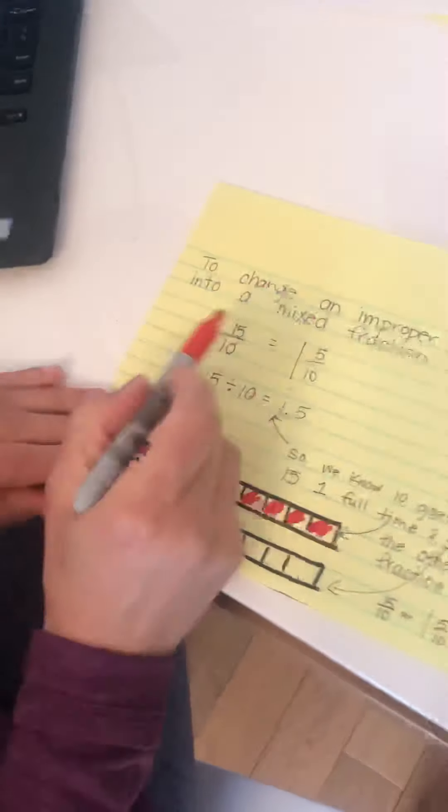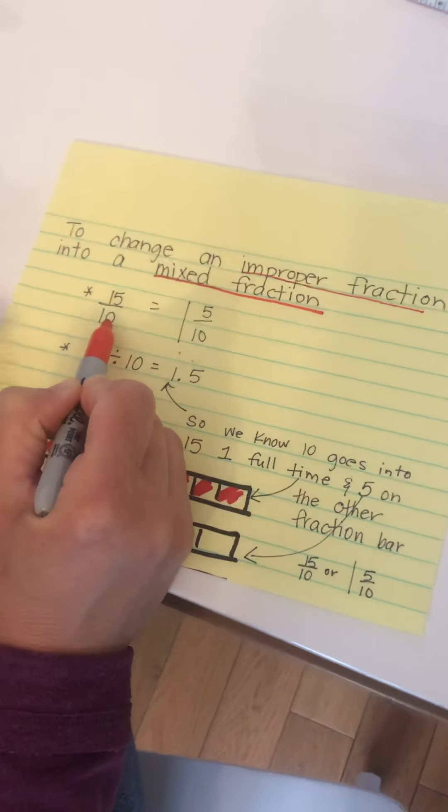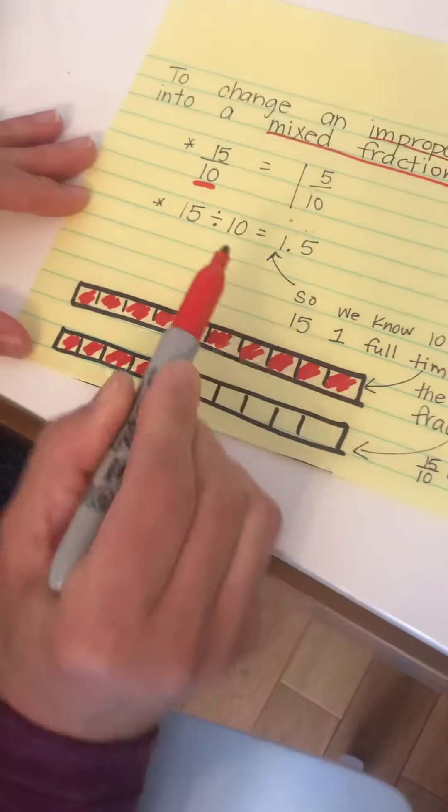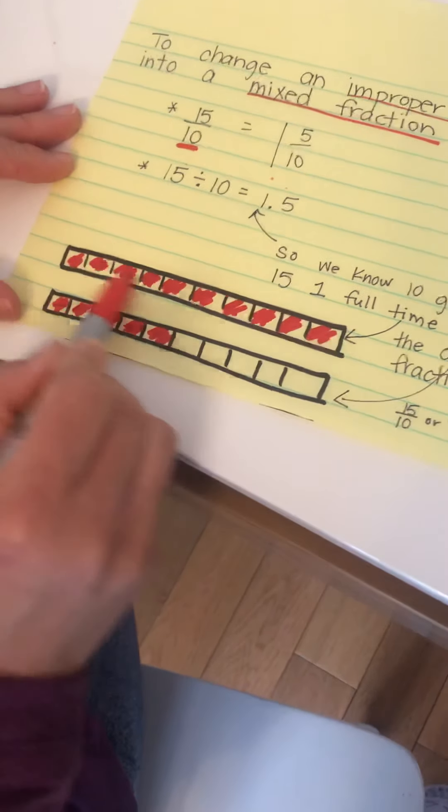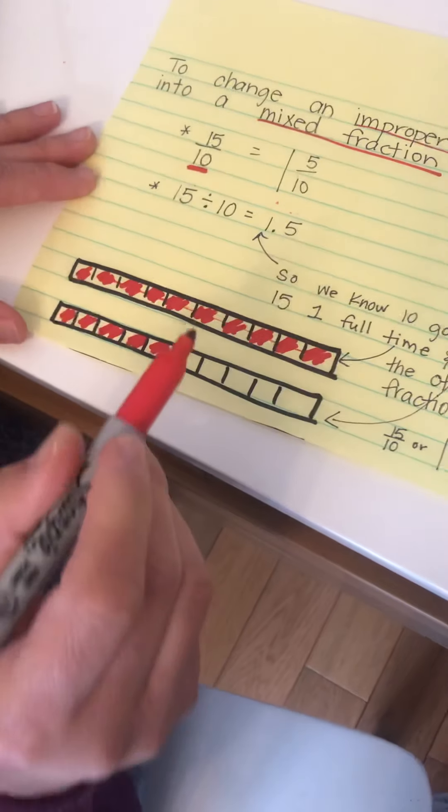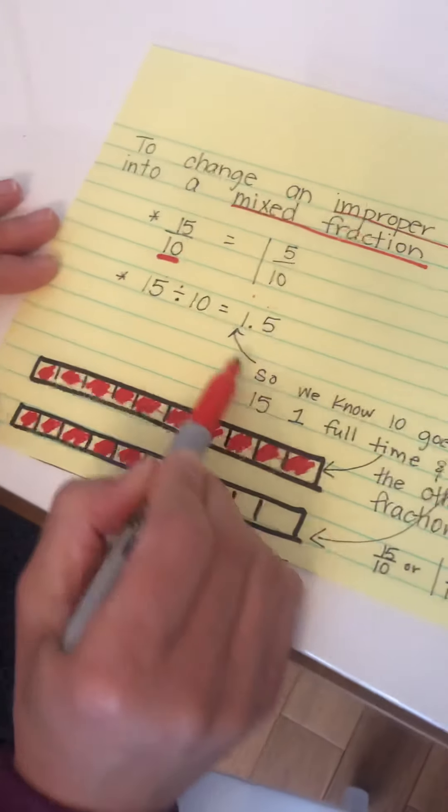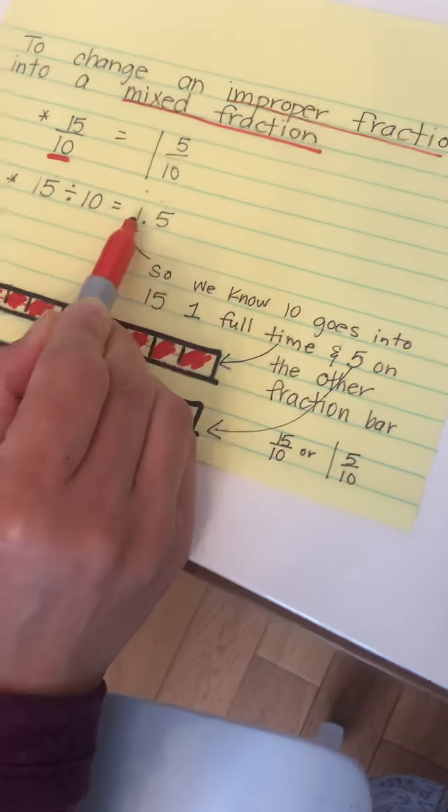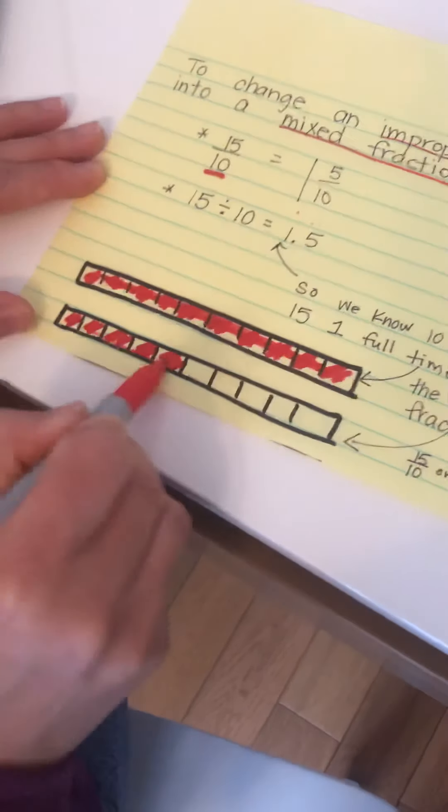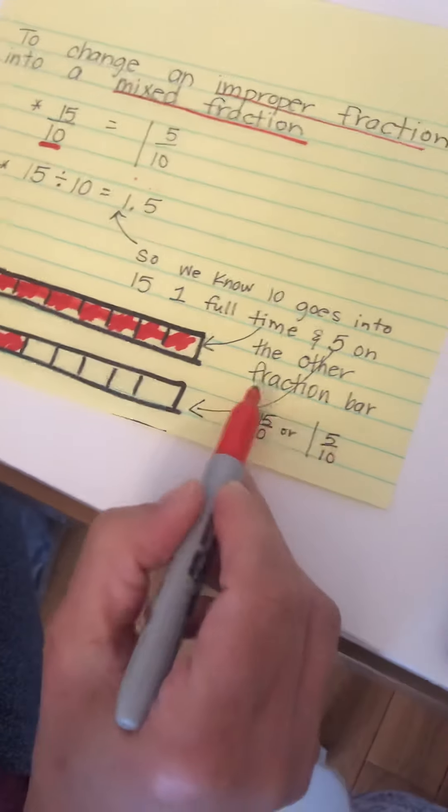And then the mathematical way to change an improper fraction into a mixed fraction. Say we have 15 tenths. That means our shape is divided into 10 equal pieces. I mean fraction bars, 10 equal pieces, and then you had to color 15, so I colored 15. You can see that this is one whole, one whole, and then five out of 10 are shaded. But if I want to figure it out through a mathematical way, I do 15 divided by 10, and 15 divided by 10 is going to be one decimal five. So we know that 10 goes into 15 one full time. So one is the one full bar shaded, one whole, and then the point five, it's five tenths, so five out of the 10. So 15 tenths, or one and five tenths, they're equivalent, they're the exact same.